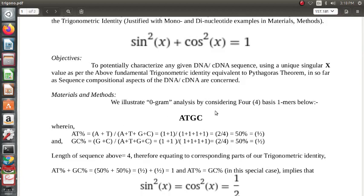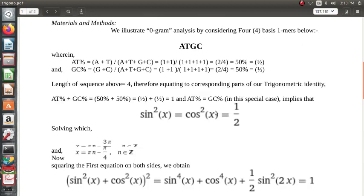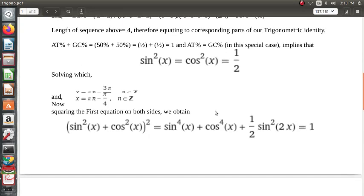So the objectives of this work are to potentially characterize any given DNA or cDNA sequence using a unique singular x value as per the above fundamental trigonometric identity equivalent to Pythagoras theorem. So let's take AT and GC. AT percentage is 0.5, GC percentage is 0.5. So 0.5 plus 0.5 add up to 1. And sin²(x) = cos²(x) = 1/2, and x equals π/4 in the acute angle regime.